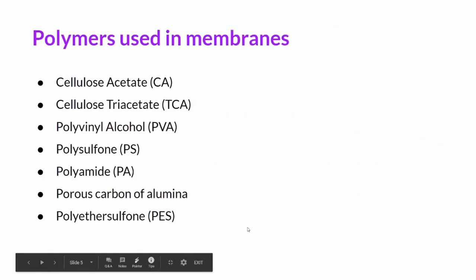Moving on to the polymers that are used in membrane processes, nowadays we see a variety of polymers being used starting from cellulose acetate, cellulose triacetate, polyvinyl alcohol, polysulfone, polyamide, porous carbon or alumina, and polyethersulfone.